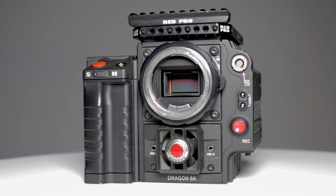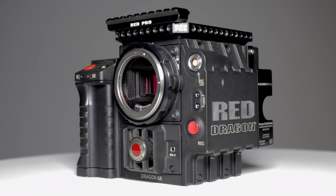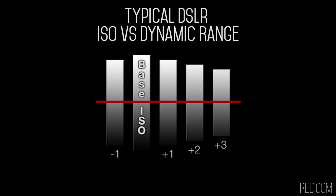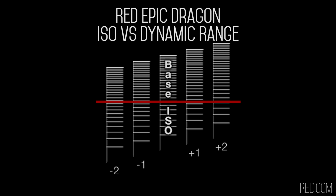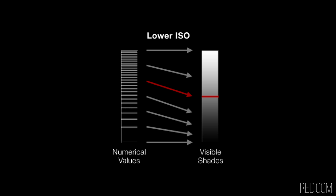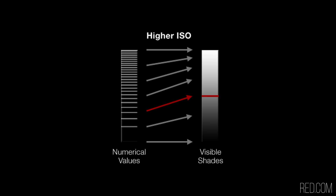RED doesn't apply any in-camera noise reduction, as they want to maintain the most possible dynamic range, detail, and color information without losing it to aggressive, lossy imaging processing techniques. Since we get a constant 13-plus stops of dynamic range at any ISO, the only things that change are where those stops are located. At low ISO speeds, most of that dynamic range is below middle gray, whereas at high ISO speeds, most of that dynamic range lies above middle gray.